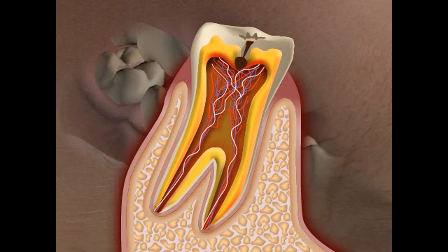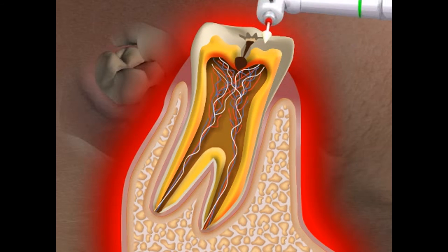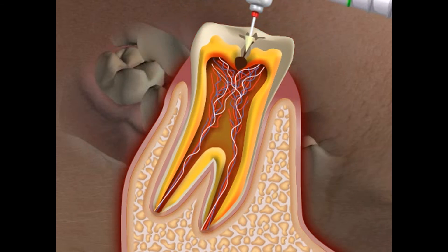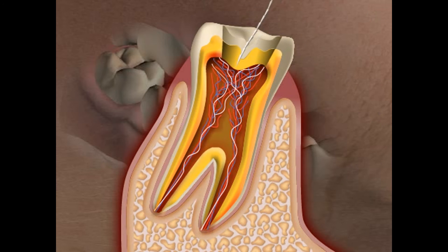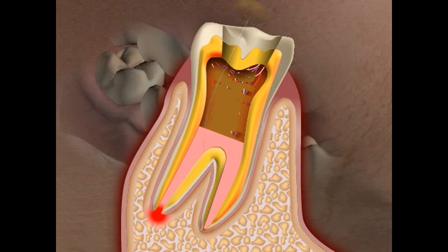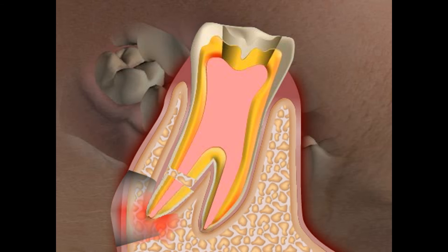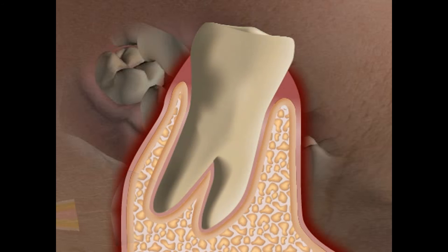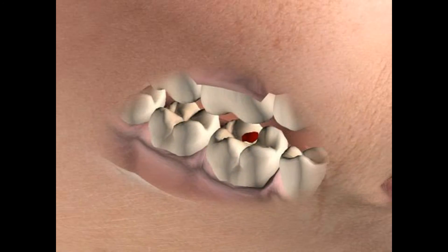Toothache usually occurs when caries have reached the tooth nerves, marked here in red. In this case, a root treatment is necessary because the nerve has been infected by bacteria. If the root treatment is done incorrectly, it can lead to bone inflammation, even after years. Patients frequently refer to this as the disease focus or the location where the infection originated. A root tip resection or even a tooth extraction might be necessary.